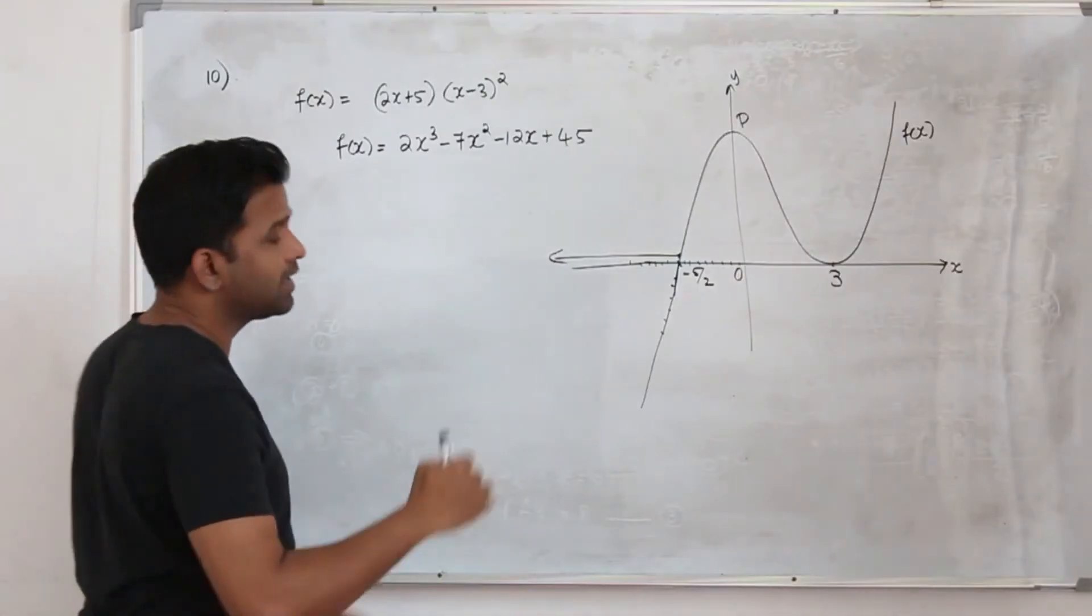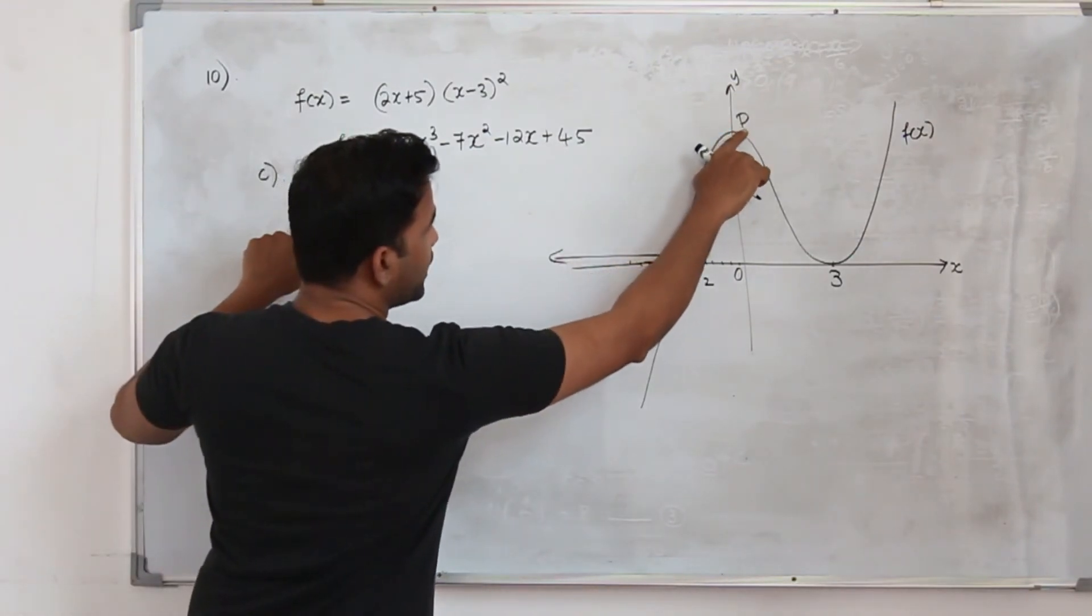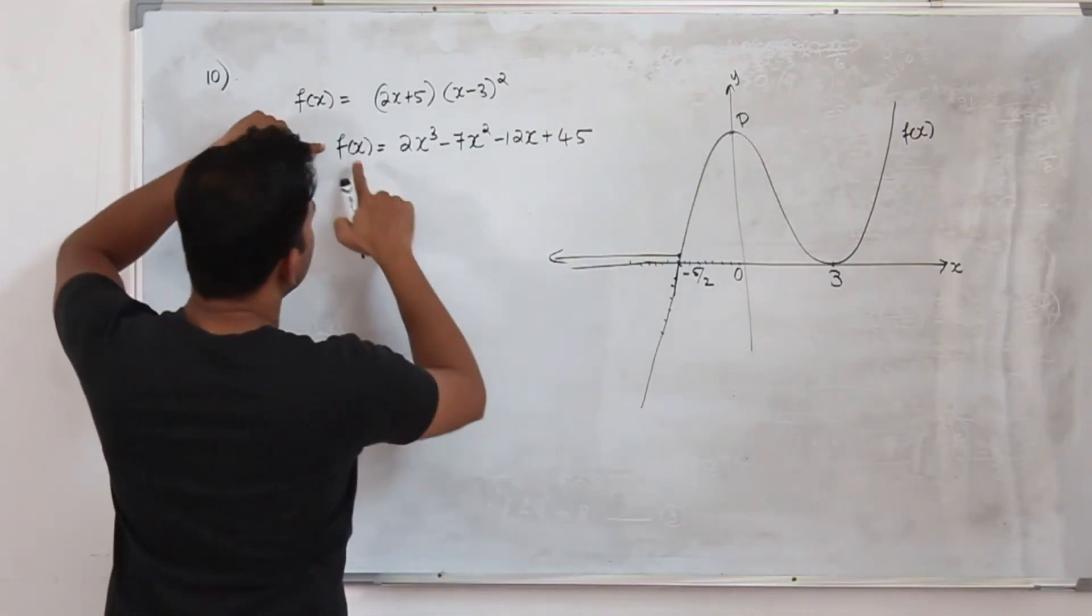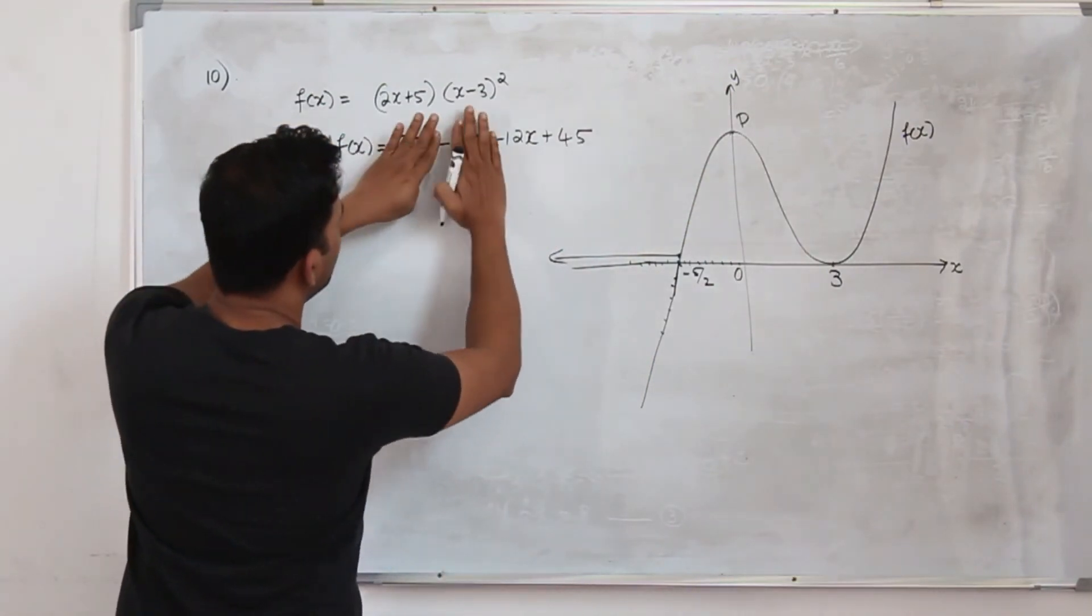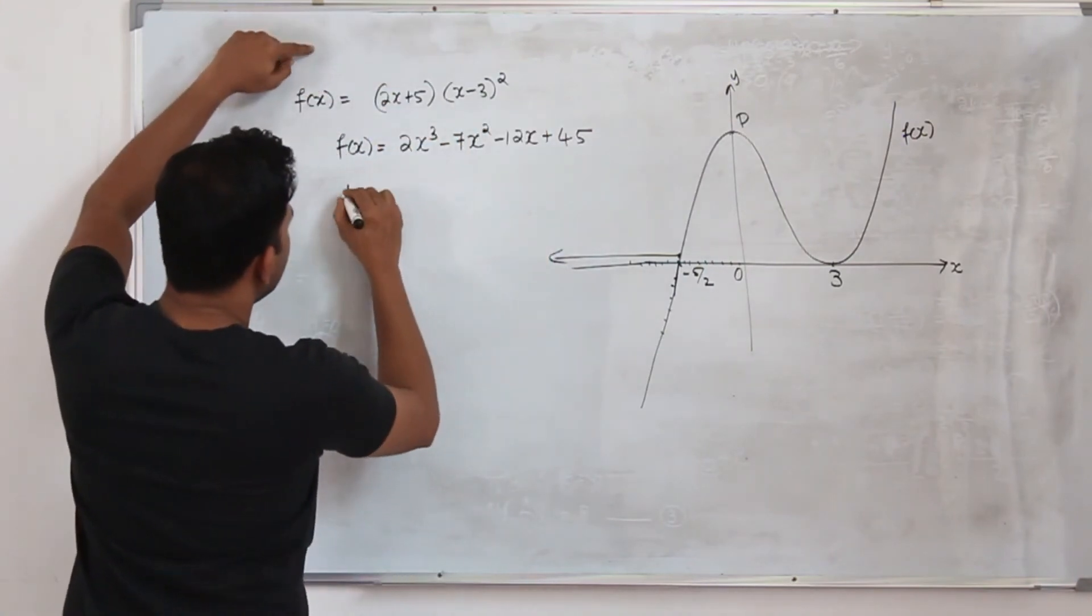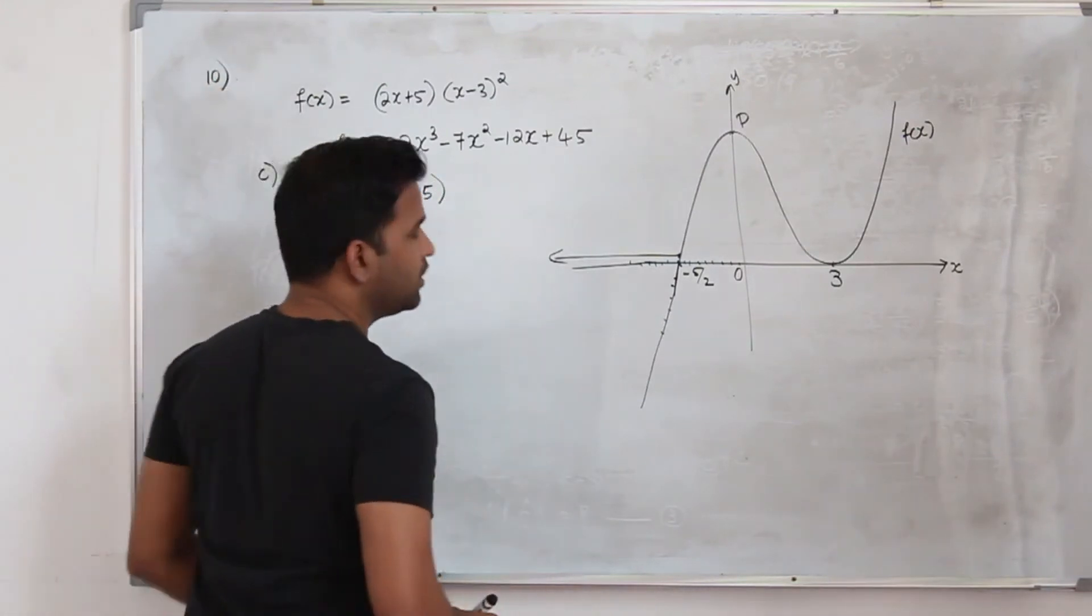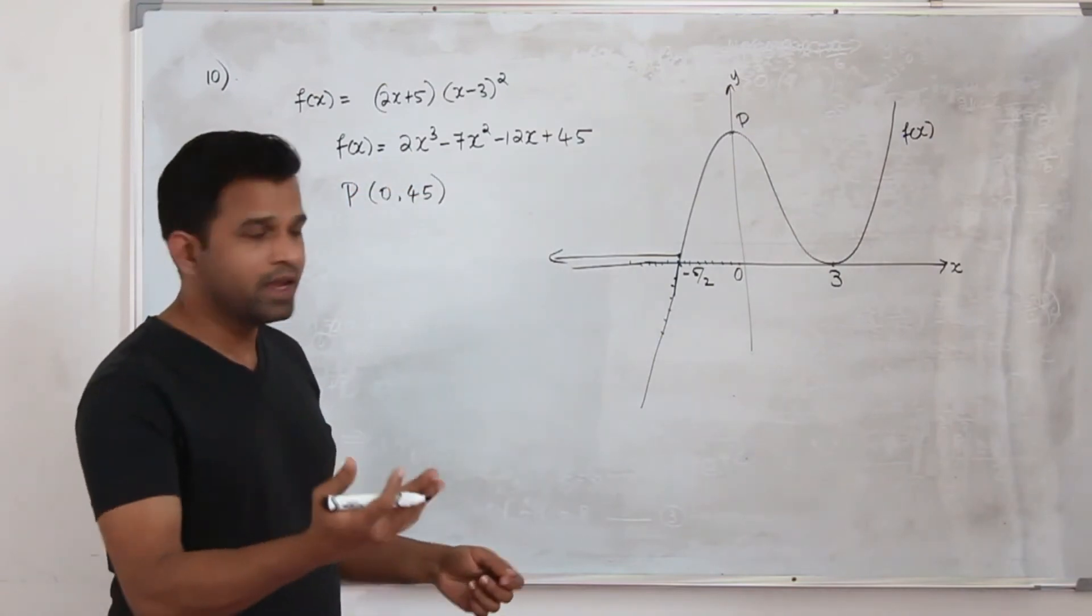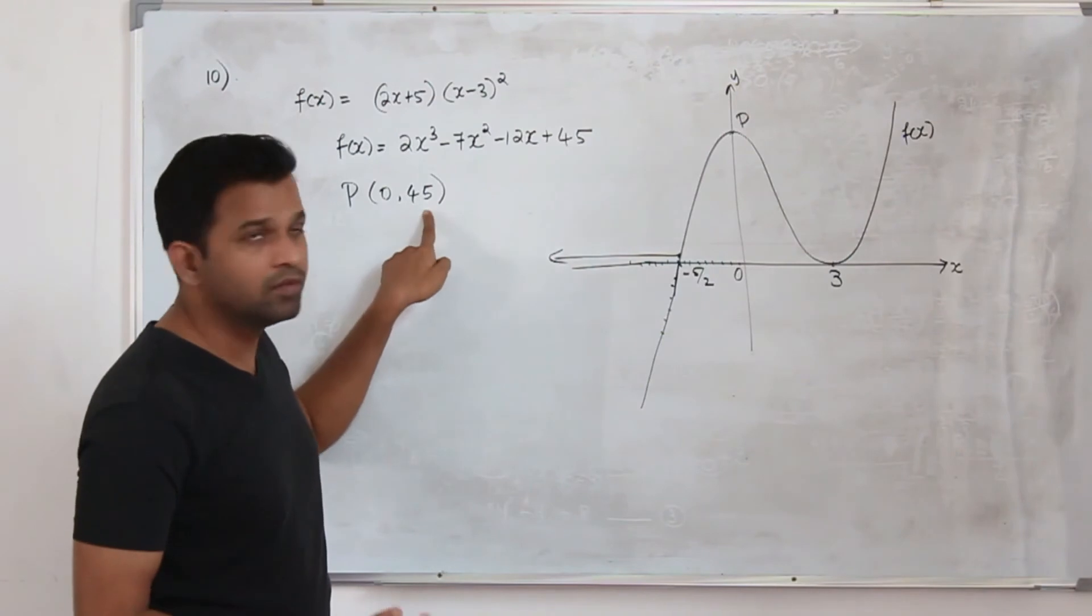Part C has two questions. The first question is find the coordinates of point p. That means this y-intercept. So we know this is the function. If you want to find the y-intercept replace x by 0. So these 3 terms will be 0. Y-intercept is 45. You can straight away write it's 45. So when you are given a function and they ask you to find the y-intercept, always replace x by 0. The constant term will be the y-intercept.